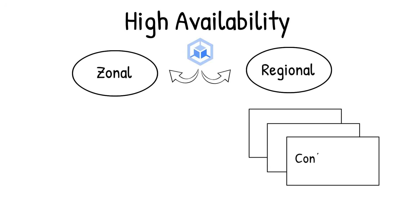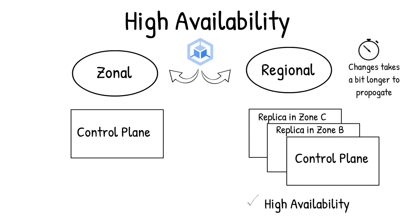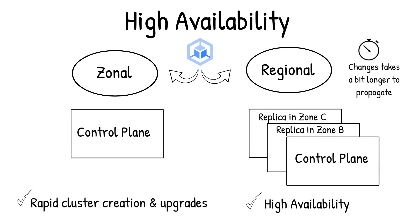High availability and scaling. For availability, you can choose between two types of clusters: zonal and regional. Regional clusters are better suited for high availability because they have multiple control planes across multiple zones in a region, while zonal clusters have one control plane in a single zone. Changes to cluster config take longer in a regional cluster because they must propagate across all control planes. Choose regional clusters when availability is more important than flexibility, and choose zonal clusters to create or upgrade clusters rapidly when availability is less of a concern.